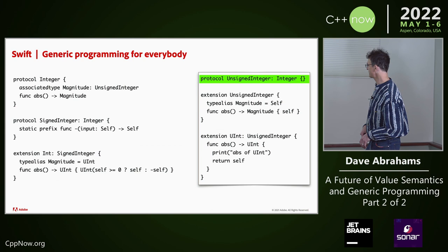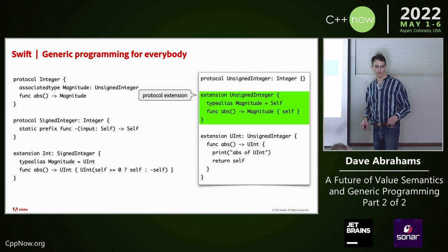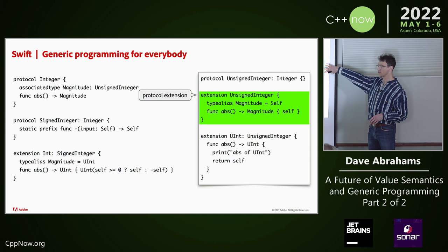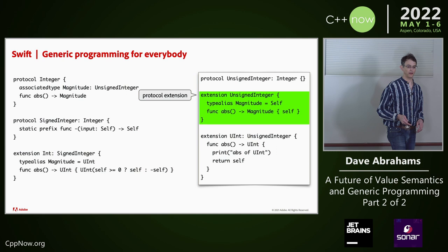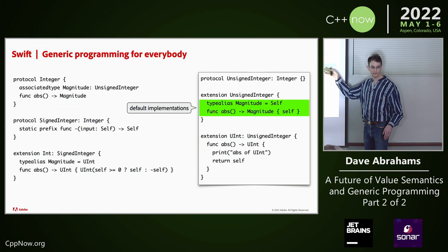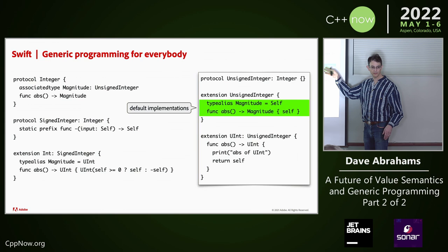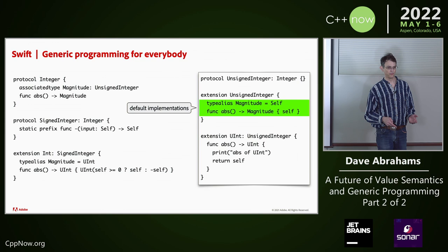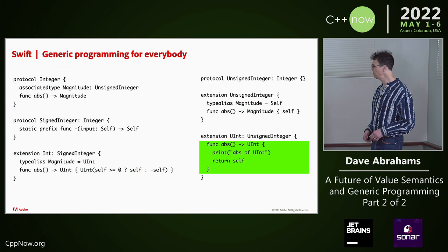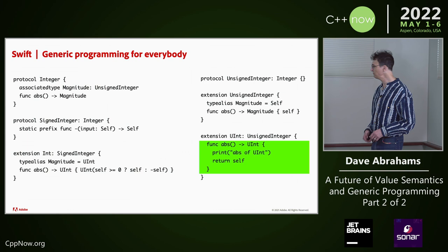Unsigned integer just refines integer — notice there's nothing in the body, it's not adding any new requirements. But here we've got a protocol extension, and we're going to extend it and put some things in the body. What goes in a protocol extension are default implementations — those are not the customization points, but if you decide to conform to that protocol and don't provide these, these are the implementations you get. These are appropriate for any unsigned integer. If you wanted to do a different abs — for example, log the fact that you're doing absolute value of a uint — you could supply that for uint. That overrides the default.